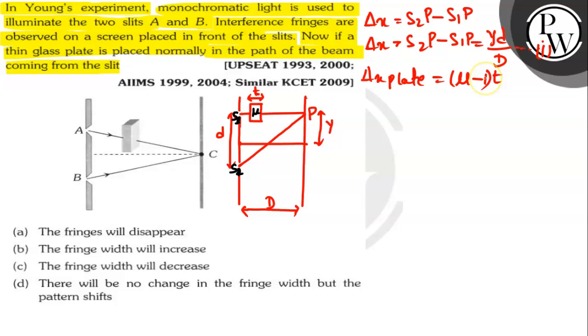New complete path difference can be written as Del X dash equals S2P minus S1P minus Del X plate. And from equation 1, we get Del X dash equals yd by capital D minus mu minus 1 into t.